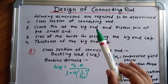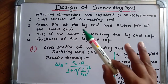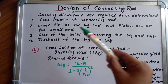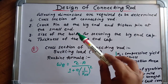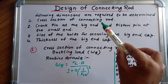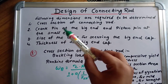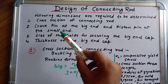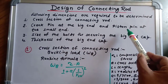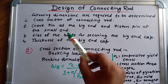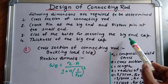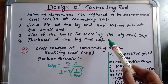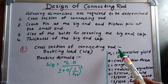Now we will discuss the design procedure of the connecting rod. There are four important steps. The following dimensions are required to be determined: first, the cross section of the connecting rod; second, the crank pin at the big end and piston pin at the small end; third, the size of bolts for securing the big end cap; and fourth, the thickness of the big end cap.